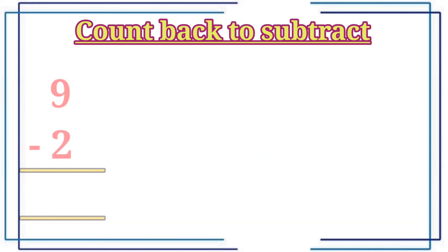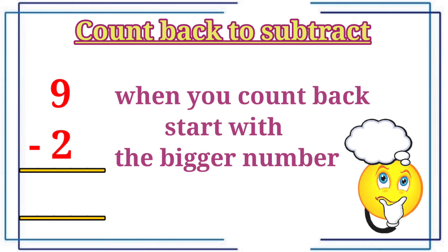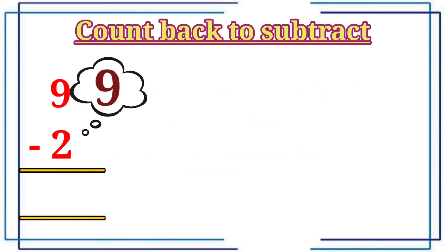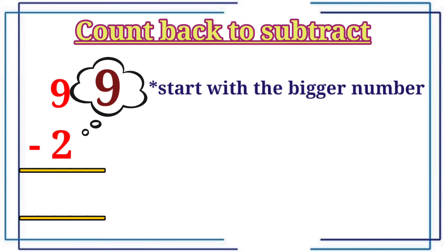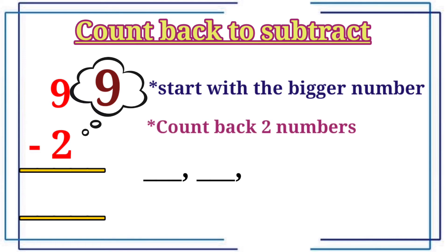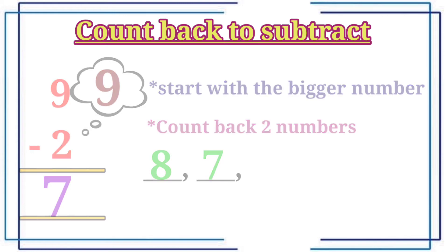Let's see the next question. Nine minus two. Nine minus two is equal to seven.